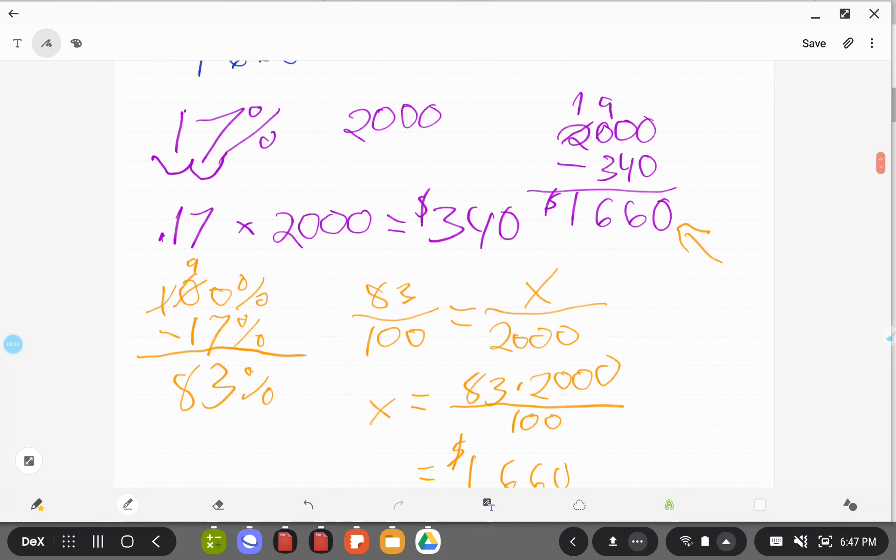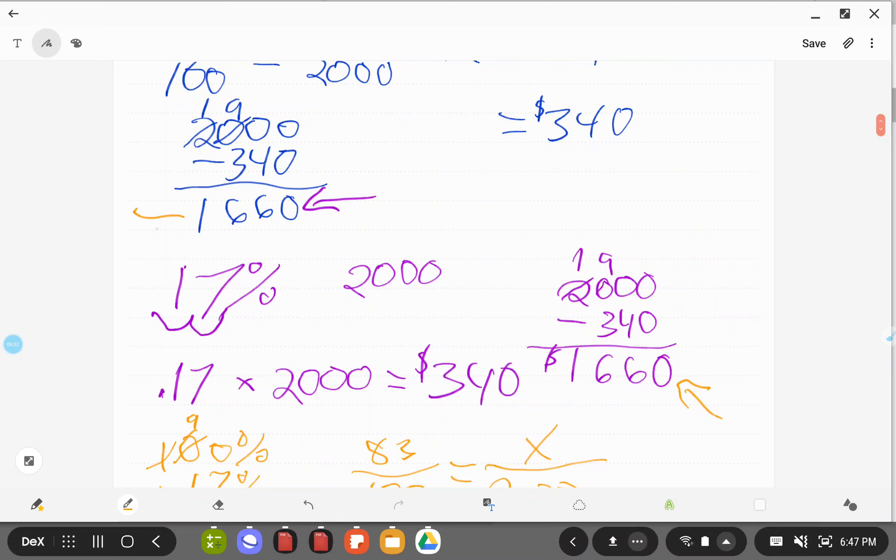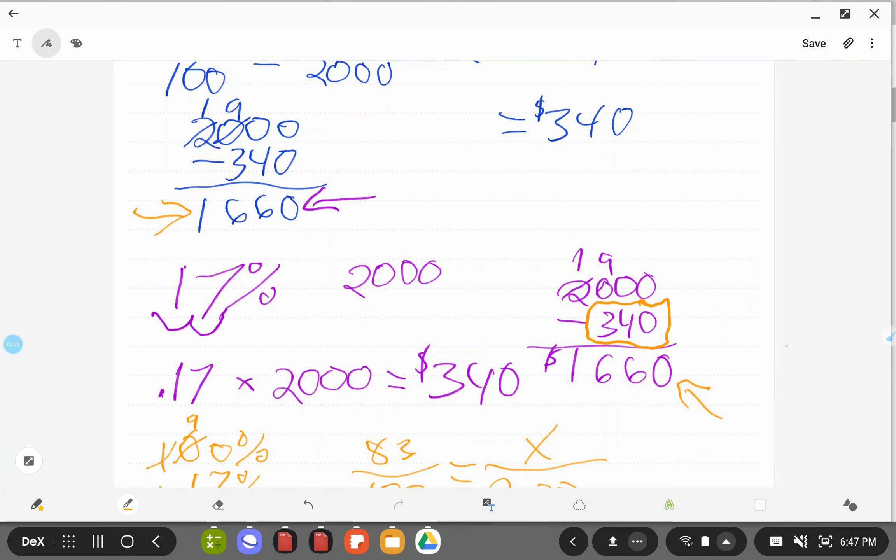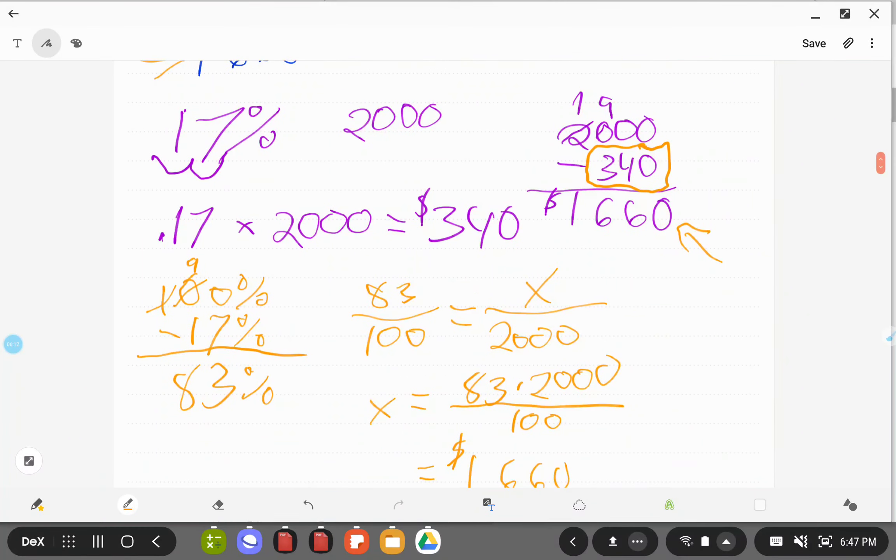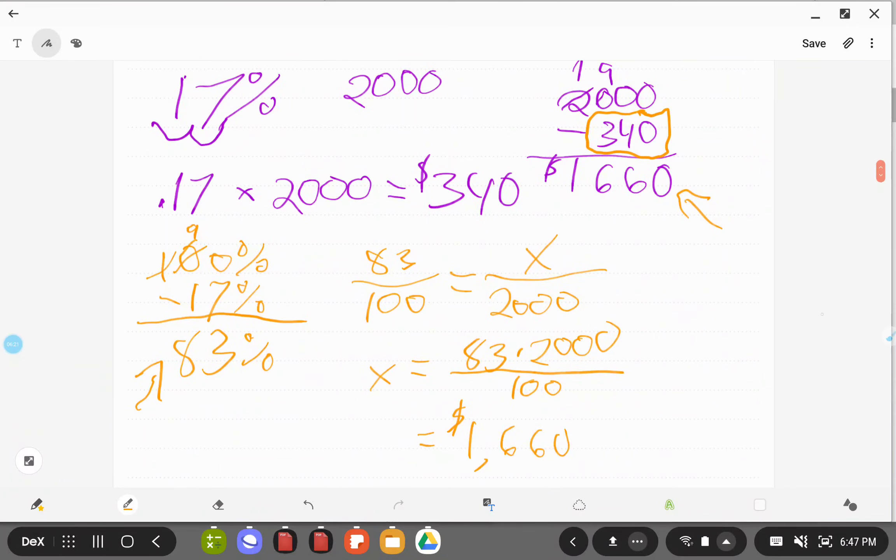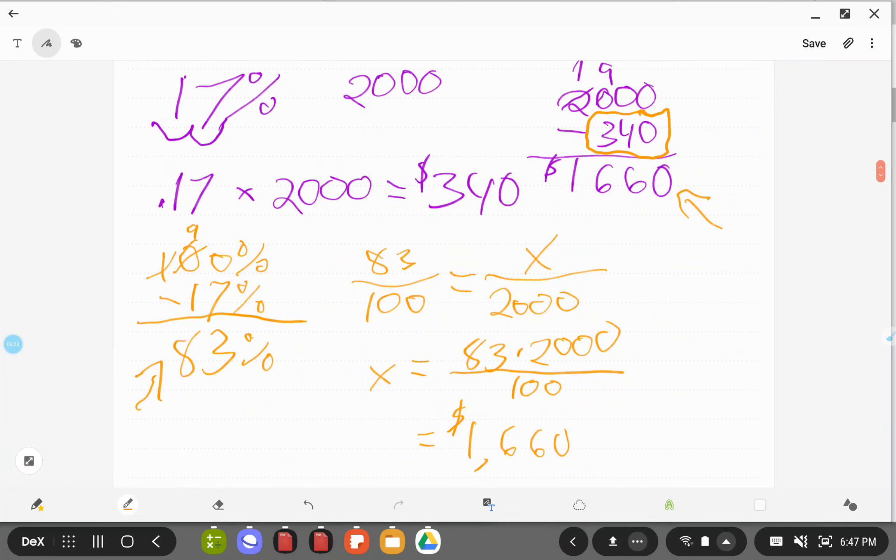Same answer we got up here and over here. So the only real difference is that instead of subtracting 340 from 2000, we never even saw that 340. Because we did our subtraction early on. We subtracted right here when we took 100 and subtracted 17 to get 83%. So which of these do you prefer? It's really up to you.